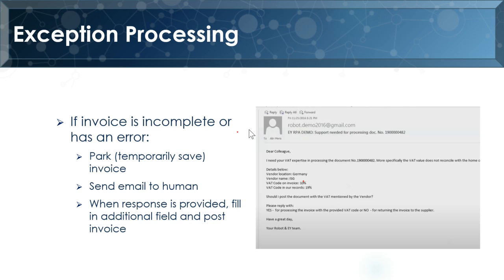The bot can also handle exception processing. For example, if information on the invoice is incomplete or there's an error, it could park the invoice and send an email to a human. In this case, the email notes a question about the VAT tax, and asks the human to reply simply 'yes' to process the invoice with the provided VAT code, or 'no' to return the invoice to the supplier. The human just looks at it, determines the correct answer, and responds. Once the bot receives that reply, it continues to process the invoice as directed.